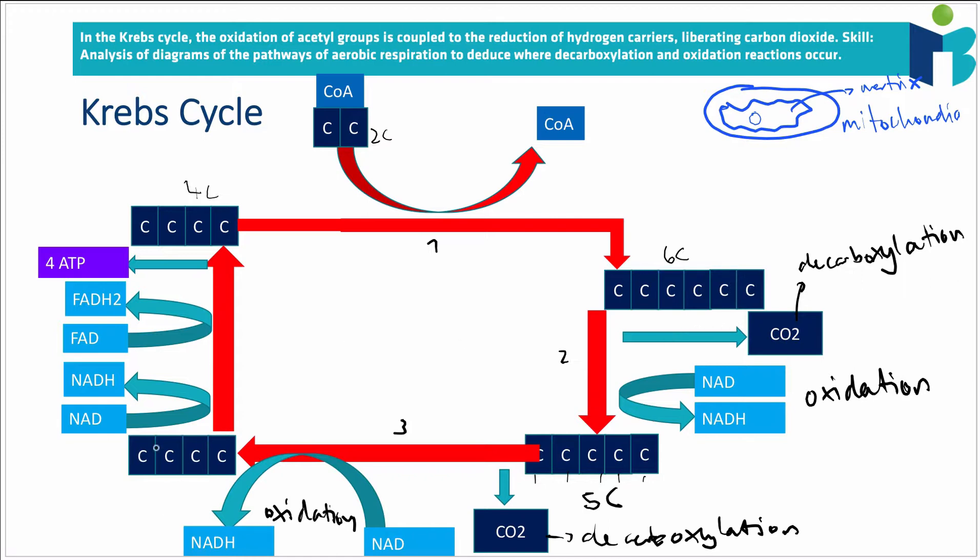And then finally, you have this four-carbon molecule. And we know that we're going to go back into a four-carbon molecule. So we don't need to do any decarboxylation in this fourth and final step. Instead, we're just going to reduce some more electron carriers. So NAD is going to turn into NADH.